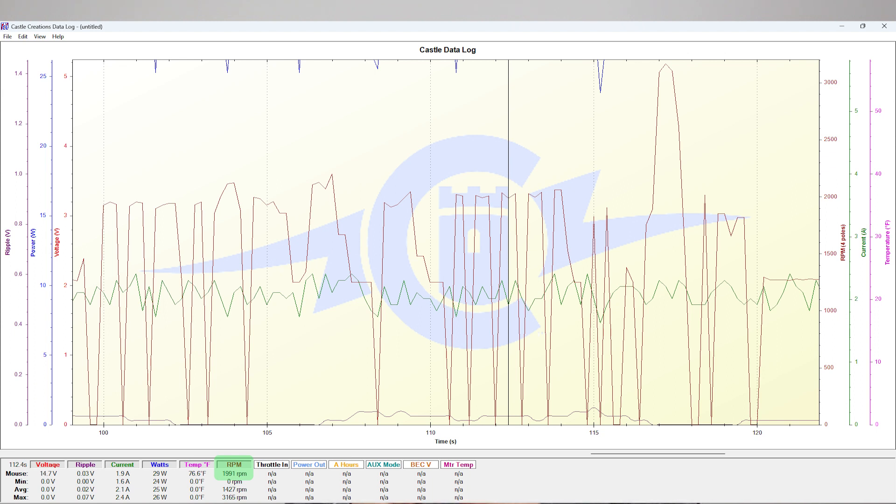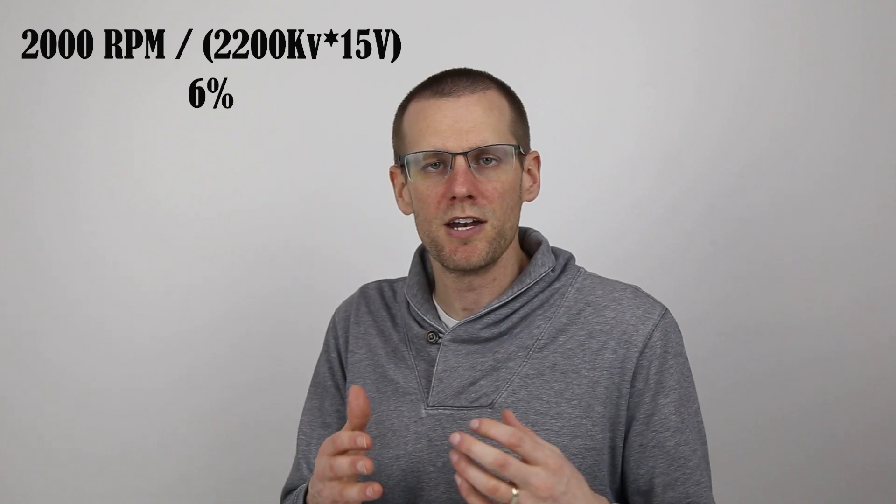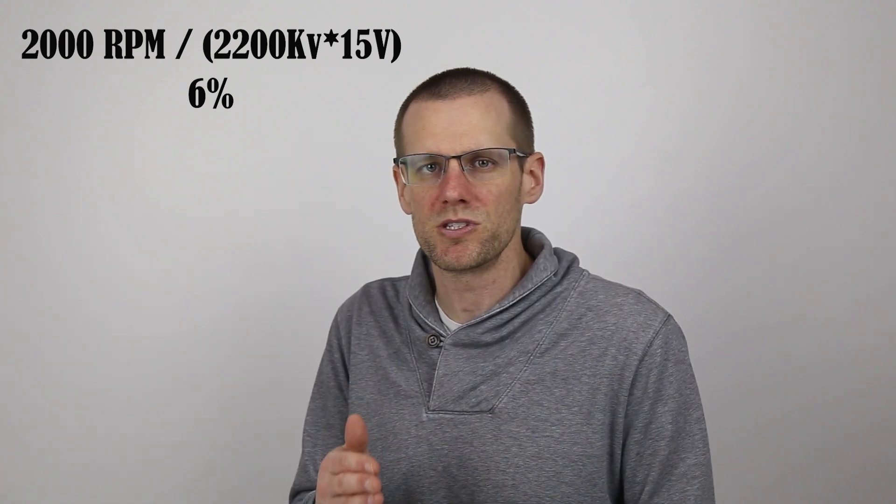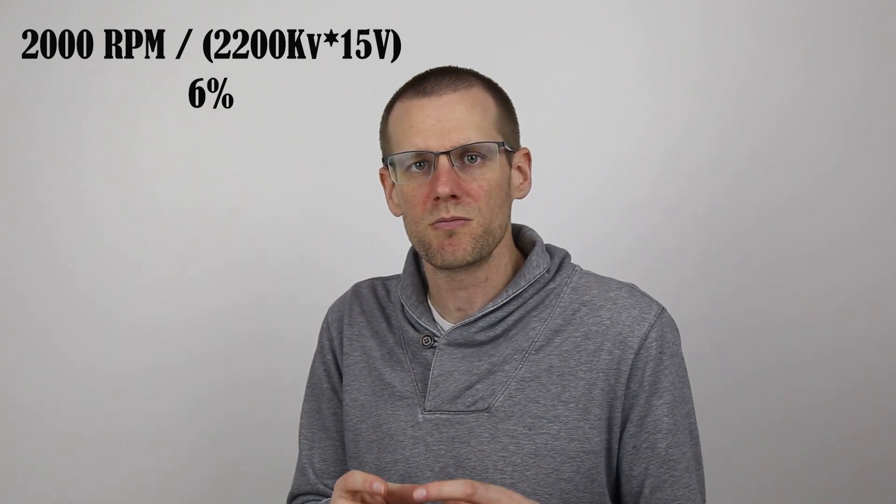This is about 6% of what this motor's potential is with this setup. Running a 4S pack wide open is going to get you so much RPM, and 2000 RPM is about 6% of that. Essentially, what we're saying is if you had a sensor motor, it's going to help you from about zero to 2000 RPM. Essentially, you hit that 2000 RPM mark, and you no longer need sensors within this setup.